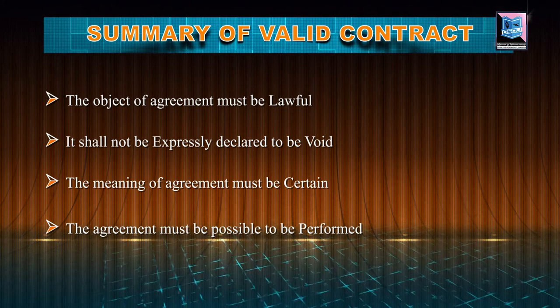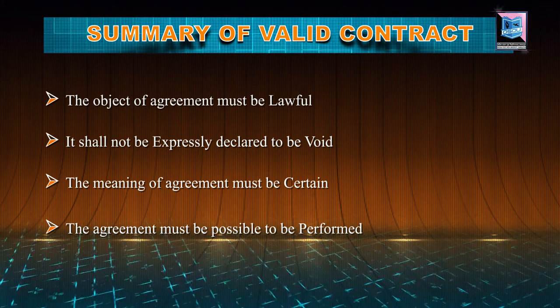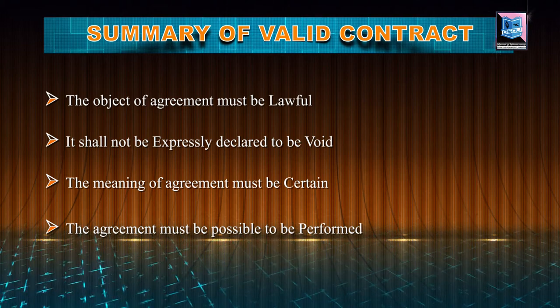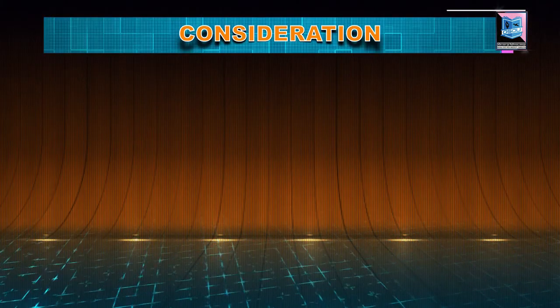The last essential is the agreement must be possible to be performed. When one party agrees to perform something which cannot be performed — if one person says to another, 'I will pluck the stars from the sky and give it to you' — whether it is possible to be performed? A reasonable man can understand it is not possible. So the agreement must be possible to be performed to become a contract.